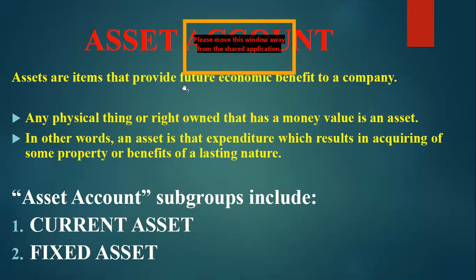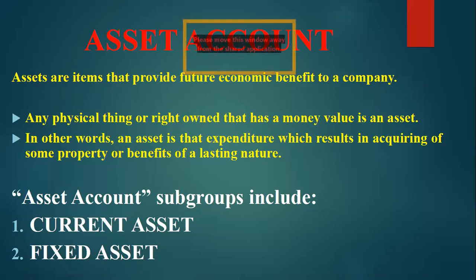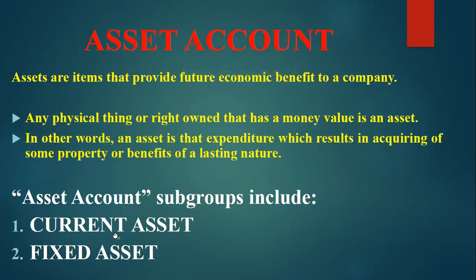Asset accounts: assets are items that provide future economic benefit to a company — any physical thing or right owned that has monetary value. Asset expenditure results in acquiring property or benefits of lasting nature, such as furniture or machinery. Assets have two subgroups: current assets and fixed assets.